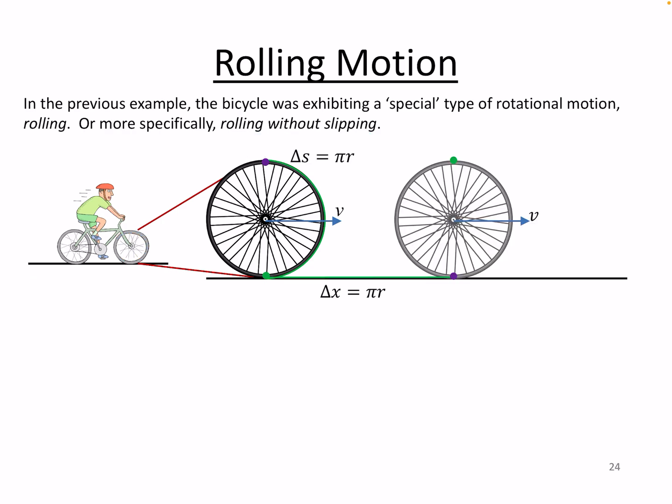What that means is that if I'm rolling without slipping — if there's any slip, then the velocity of that contact point relative to the ground is going to be non-zero. If the wheel is not rolling and you're just skidding along, then the whole wheel would be moving relative to the ground, and you want to maintain grip when you're on a bicycle or in a car.